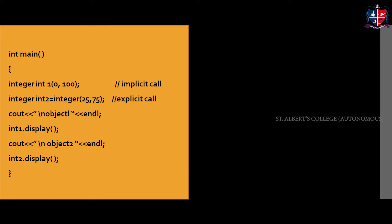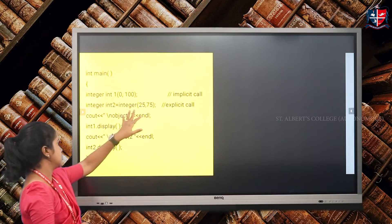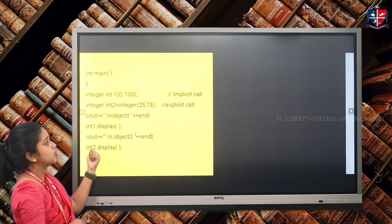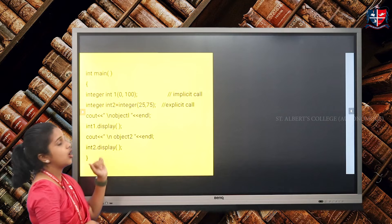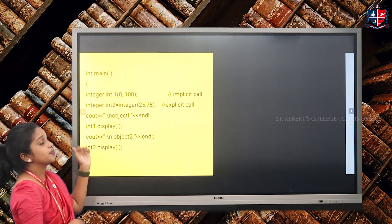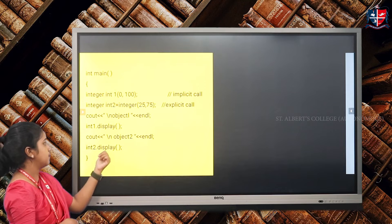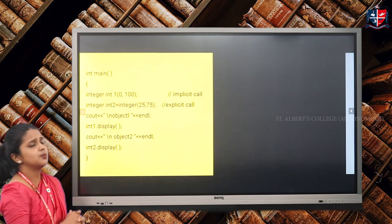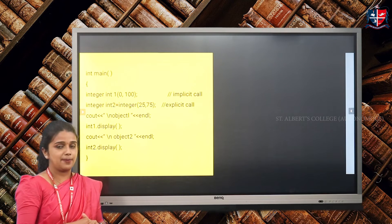When we display the objects, accessing the display function using int1 — which was created by passing values implicitly — the values of M and N will be 0 and 100. When we access the display function using int2 — which was created by explicitly calling the constructor — the values of M and N will be 25 and 75 respectively. This is a simple program implementing the concept of a parameterized constructor.